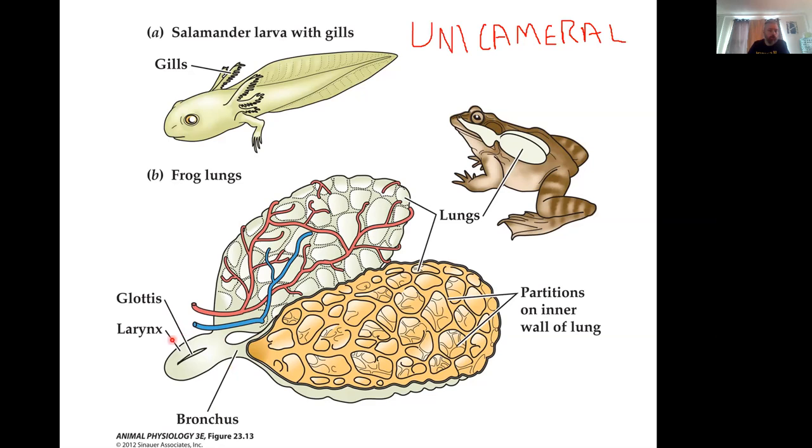So the first structure is going to be a larynx. Okay. And in a thing like a frog, that larynx is mostly there to house this little opening here called the glottis. And this glottis acts like a sphincter that can close off the airway. We can essentially prevent air from entering or leaving the lung by closing that glottis.